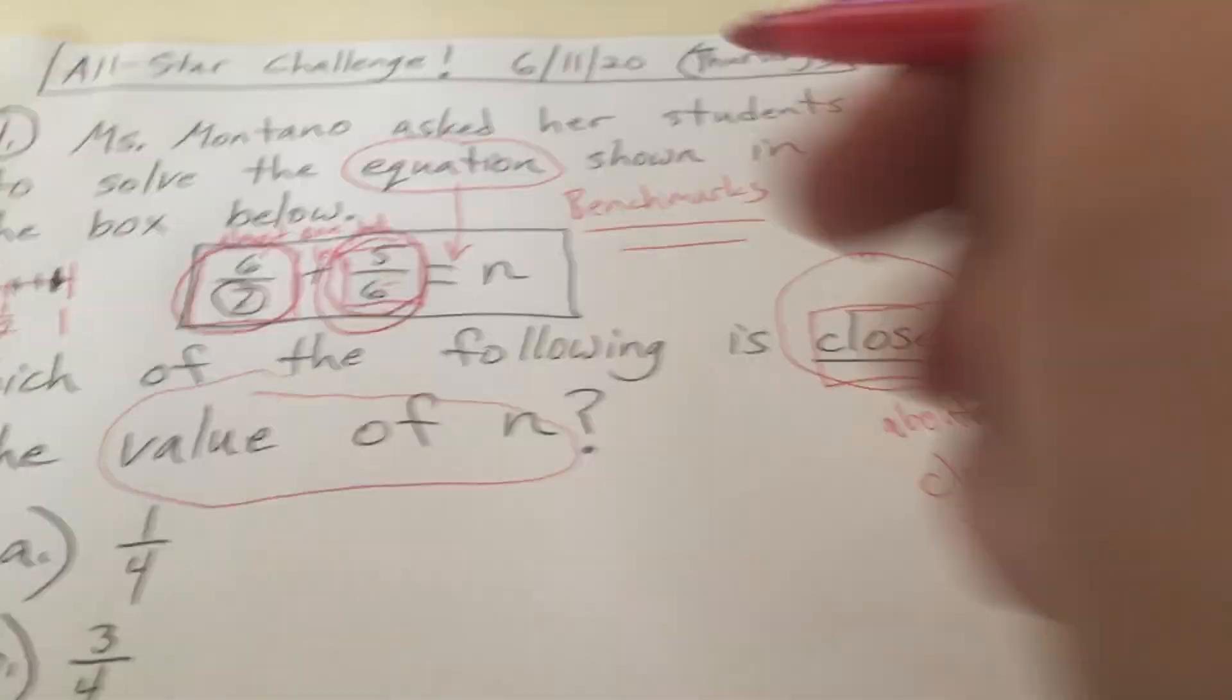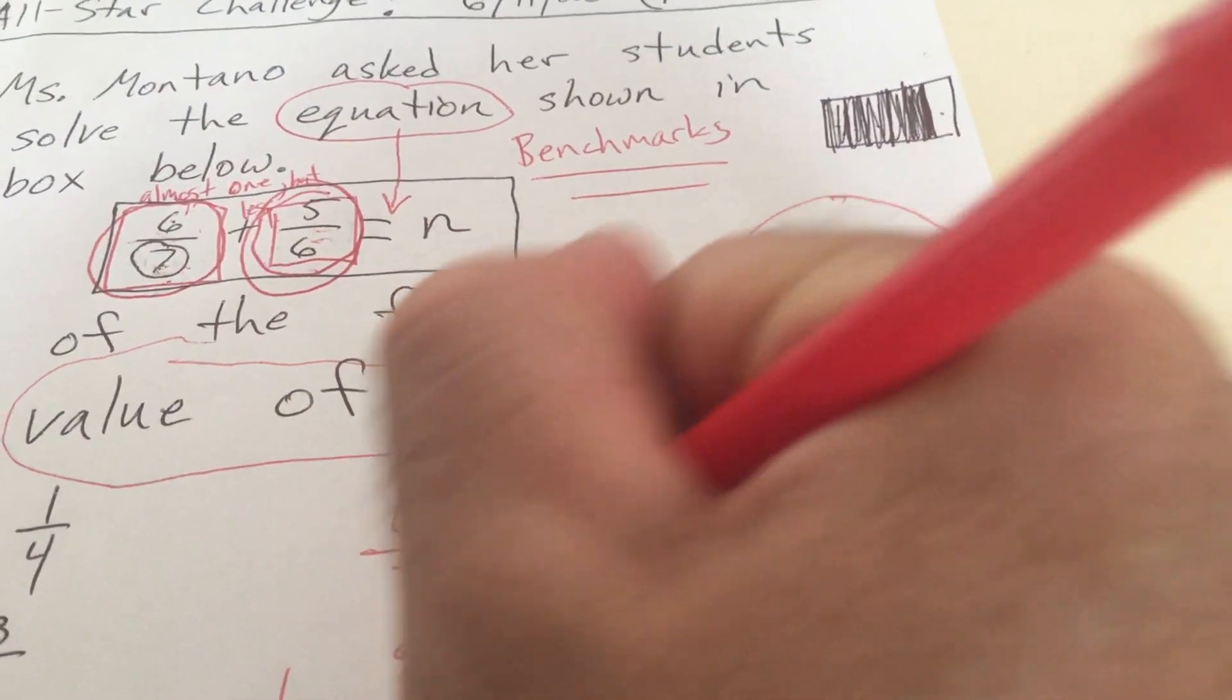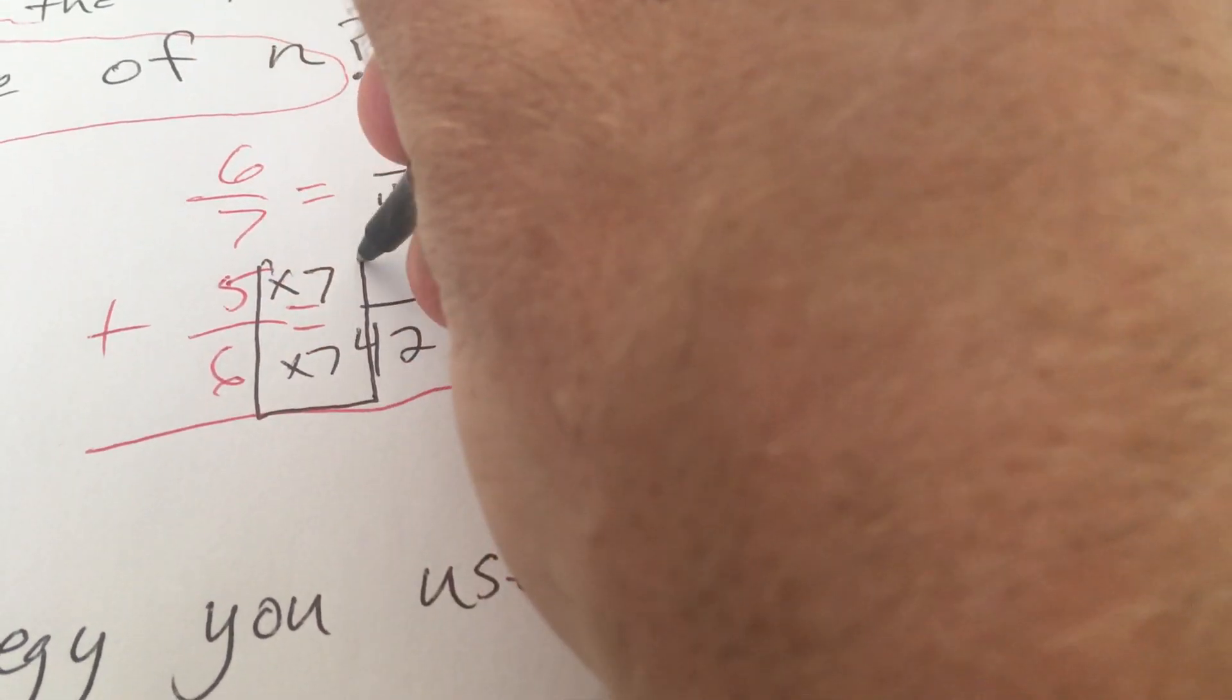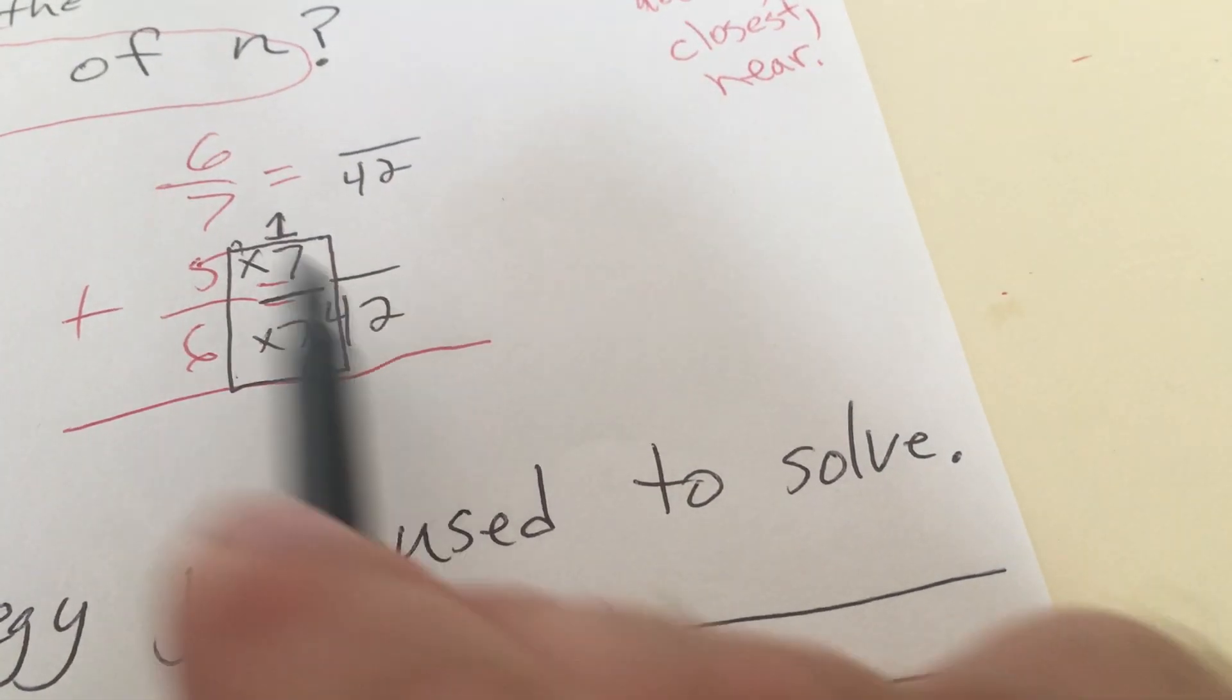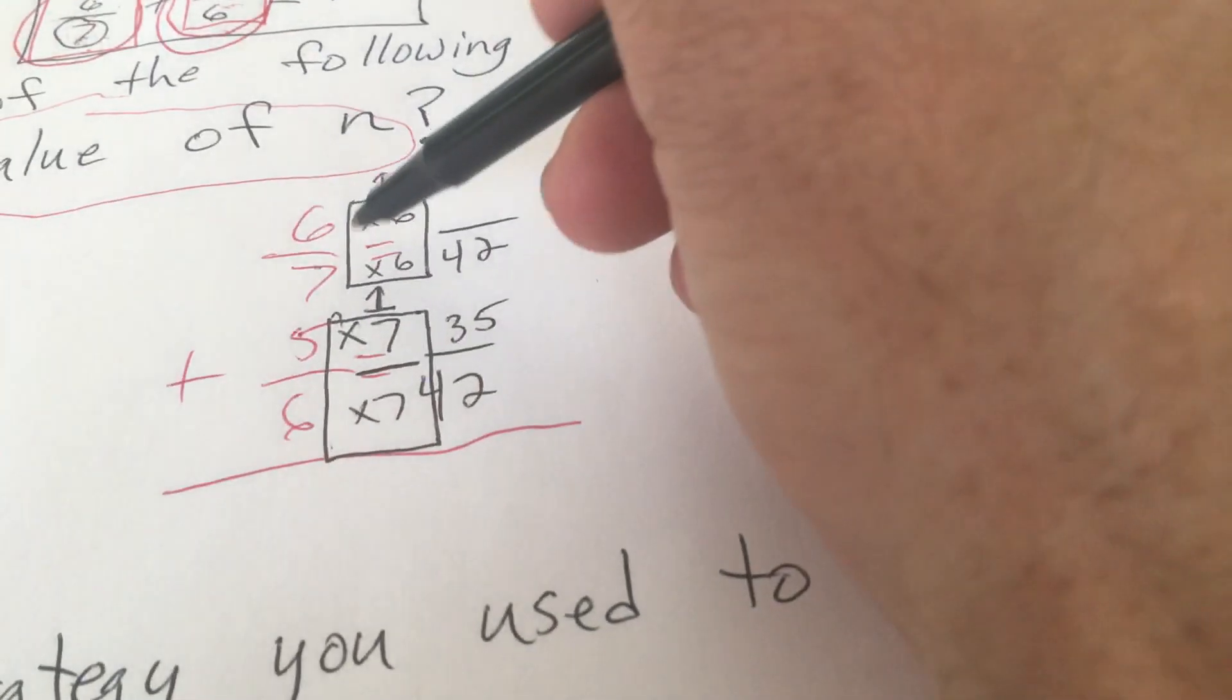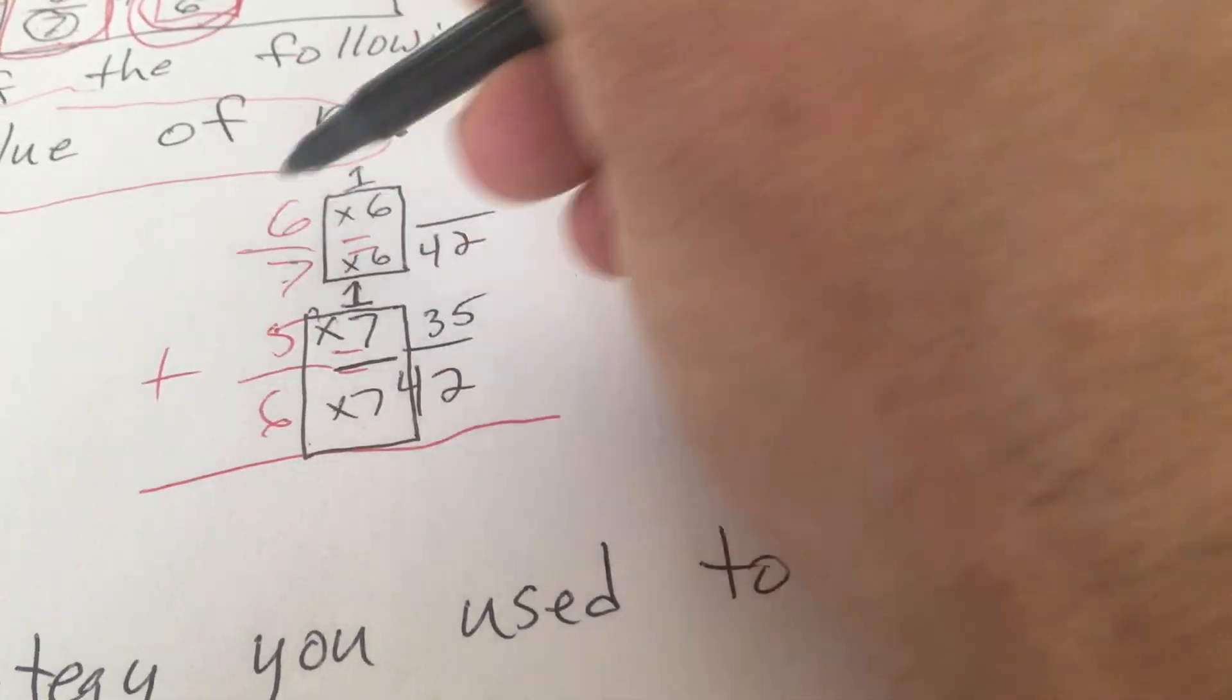Another strategy you could have used was make common denominators. Six and seven, a common denominator for sixths and sevenths would be 42. Because six times seven gets you to 42. So we're going to multiply five times seven. That way we really multiplied five-sixths times one. We multiplied it times seven-sevenths, which is equal to one. So six times seven was 42. Five times seven is 35 out of 42. Then seven times six is 42. So we're going to do six times six. That way we multiplied by a fraction that's equivalent to one and we didn't really change the value. Seven times six. So six times six is 36.